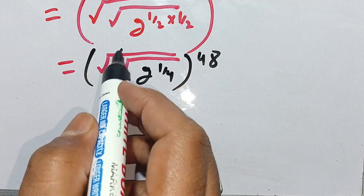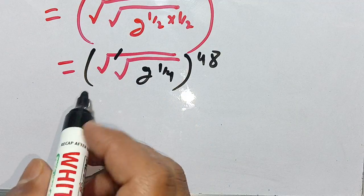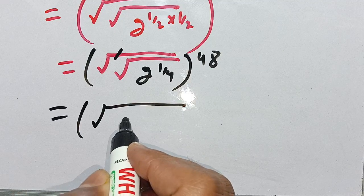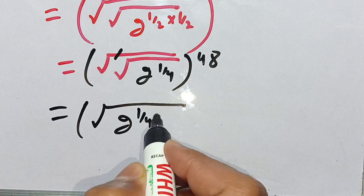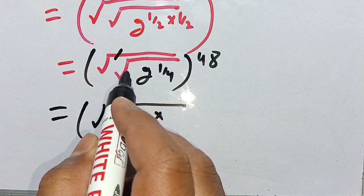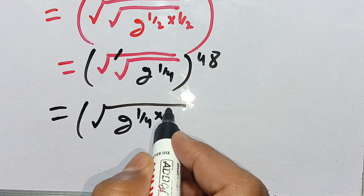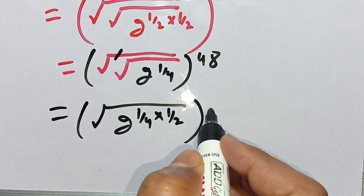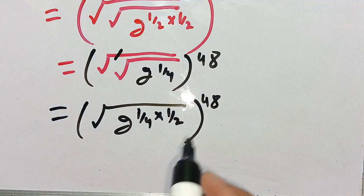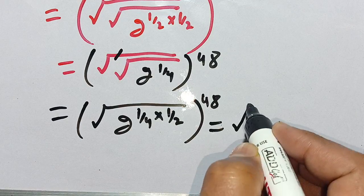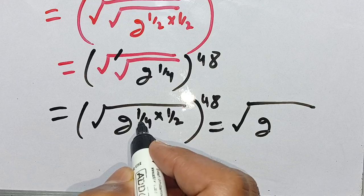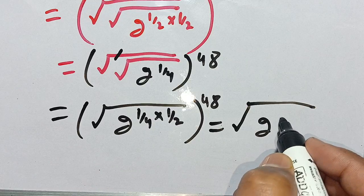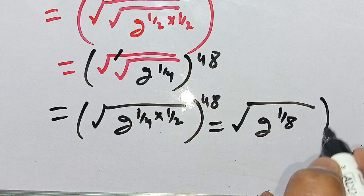We evaluate the next square root, keeping the remaining square root as it is. We get 2 to the power 1 divided by 4, times 1 divided by 2, which equals 1 divided by 8, and bracket power 48 as it is.